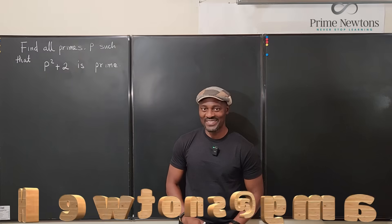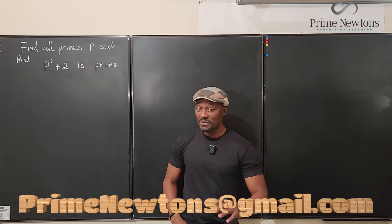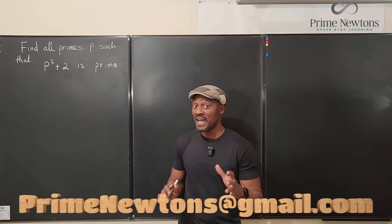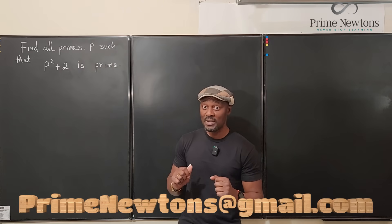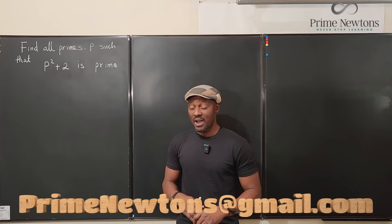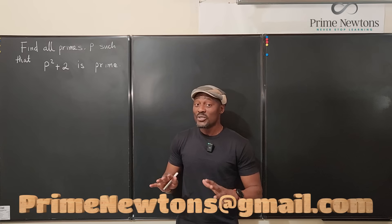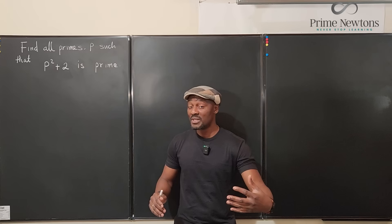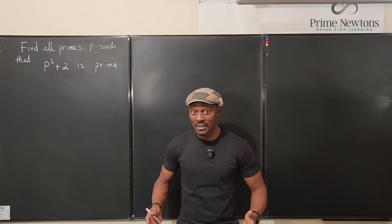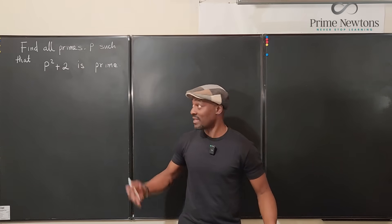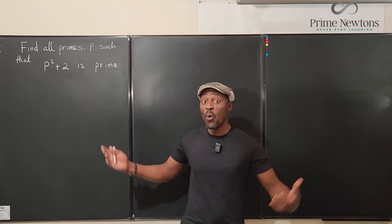Welcome to another video. We want to find all prime numbers such that the square of that prime number plus 2 is also a prime number. Now anytime I get a question that says find all, my immediate assumption is there is none, or there are some but they're not many, that's why they ask me to find them, or all of them behave the same way.